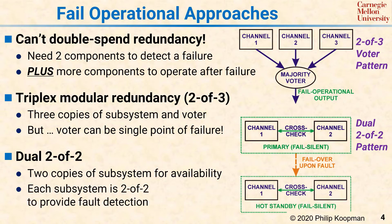Each of the two 2-of-2 blocks does internal fault detection, so each block is fail-silent. You have a pair of those, so if one 2-of-2 block fails silent, the other can take over. This pattern is commonly used in real switches, and in practice the primary and secondary blocks are swapped periodically to make sure that both blocks are still working.